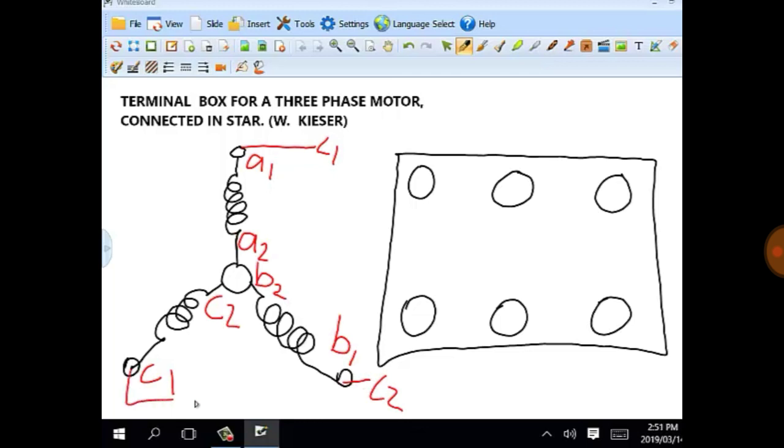A2, B2, and C2 make contact at the neutral point, and we've got three lives. So we've got six studs in our terminal box, and we've got live one, live two, and live three coming into the terminal box.